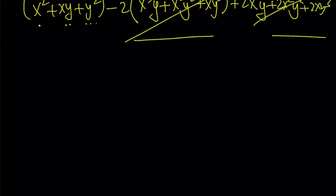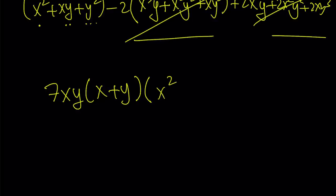Let me put it all together and give you what the numerator looks like. It's going to be seven x y times x plus y — remember, we had that — and the other gigantic factor is x squared plus x y plus y squared, quantity squared. So that is my numerator.